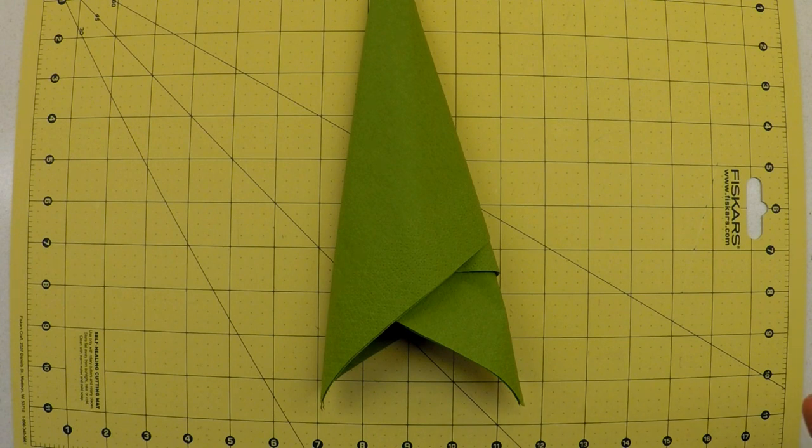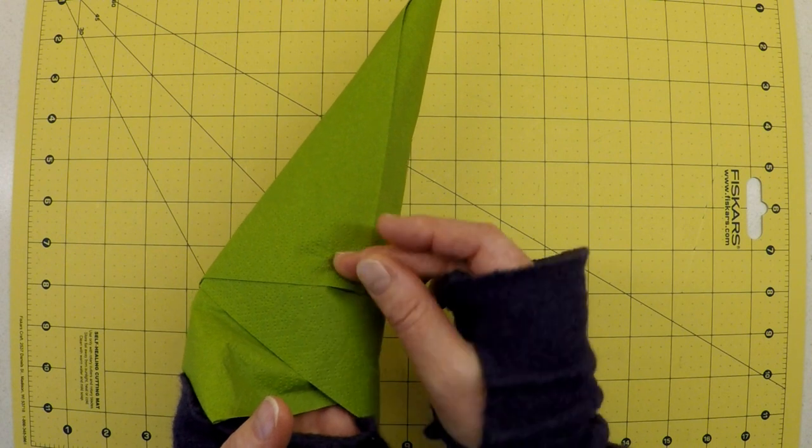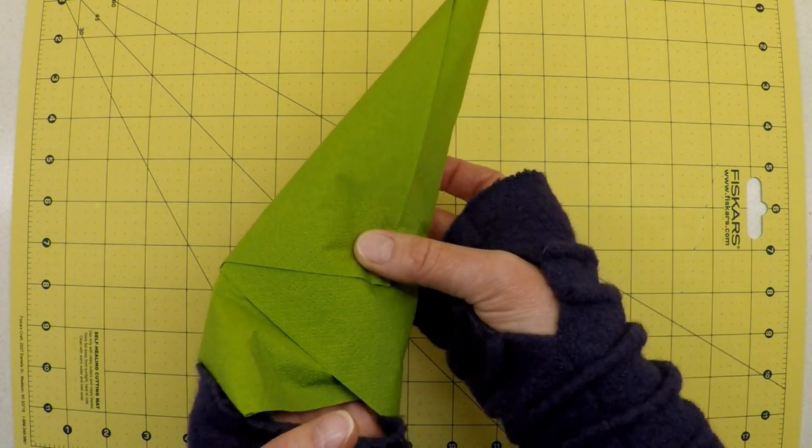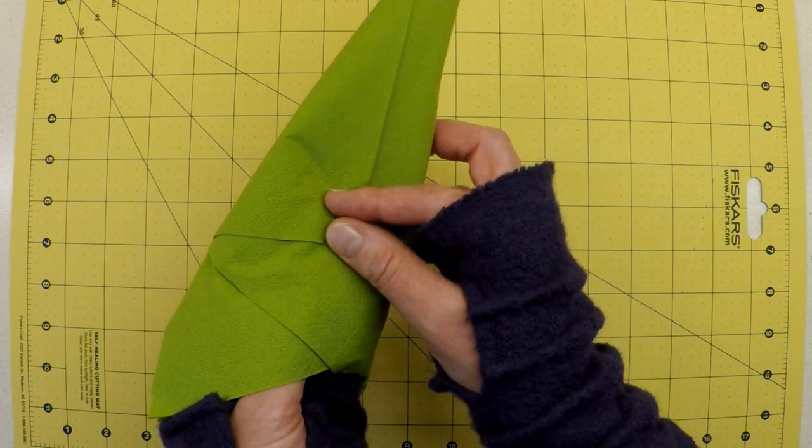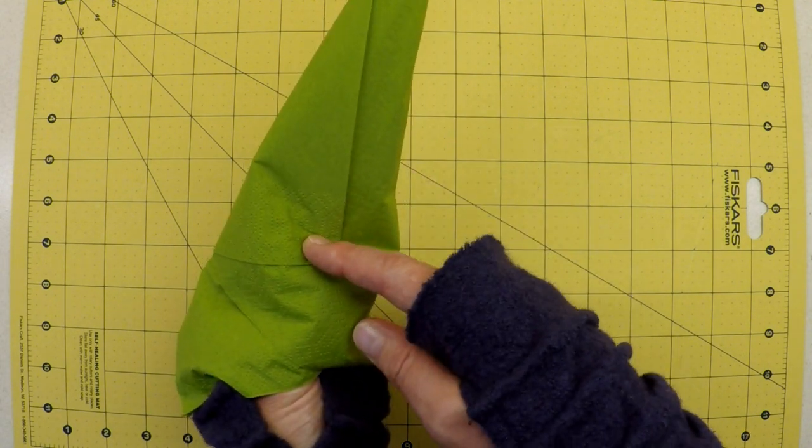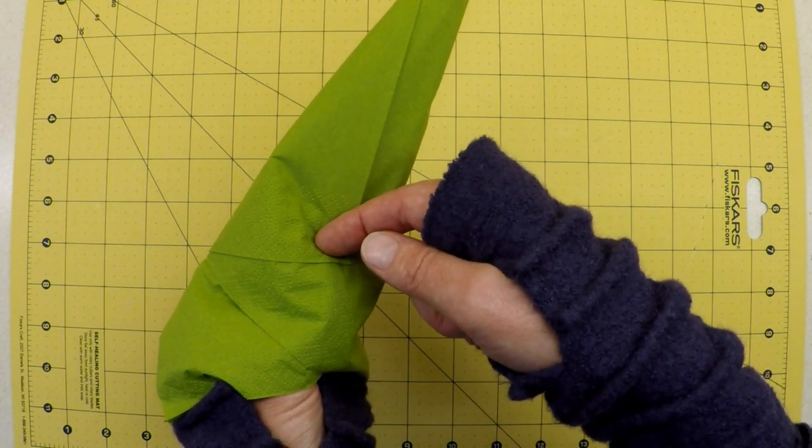At this stage we're going to start creating a cuff. I tend to try and keep a hold of this little layer here because it tends to unravel if you're not careful. The first thing I'm going to do is use my finger to create a sort of valley section. You push down into the layers of material.